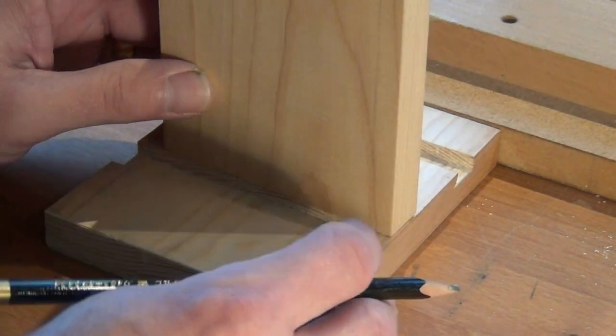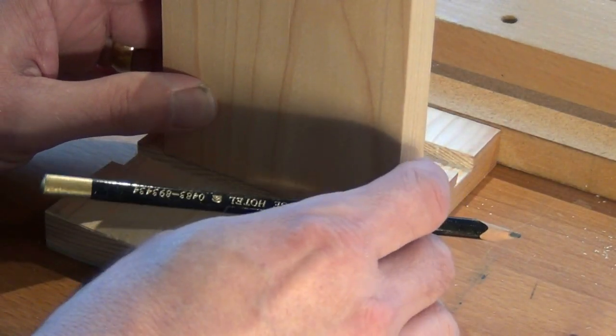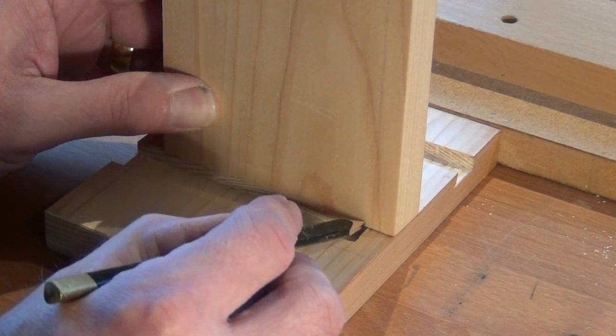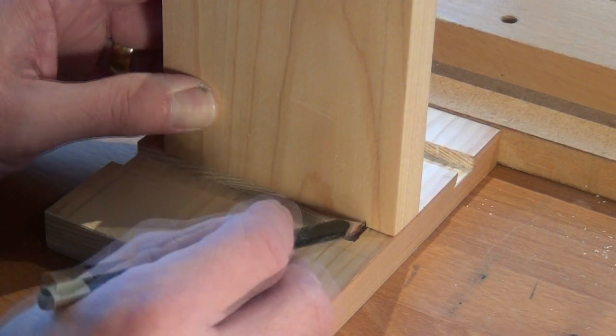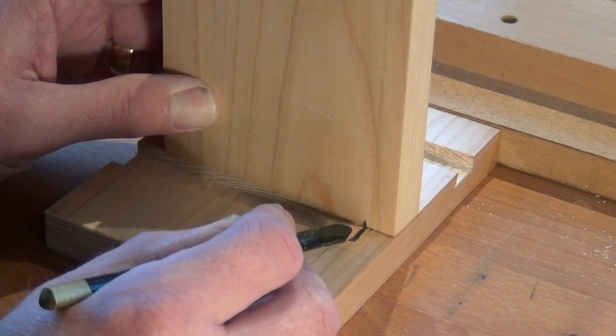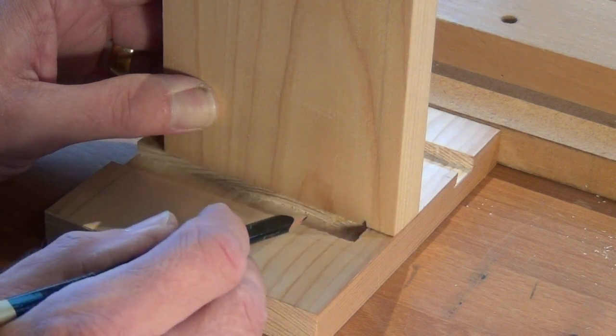Place the shelf flush with the front and mark the stop in the groove. I leave a little bit of allowance here because I don't want anything to stop the joint going fully together.